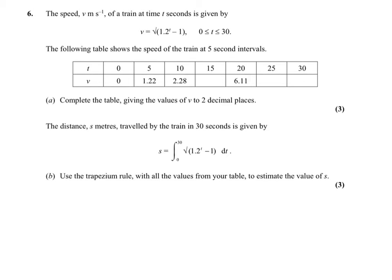Question 6, part A: complete the table given the values of V to two decimal places. You are literally using your calculator and putting some numbers into this formula here. That should be pretty straightforward — in fact I'll do that for you, so it's 3.80, 9.72 and 15.37. I think it says to two decimal places — it does.